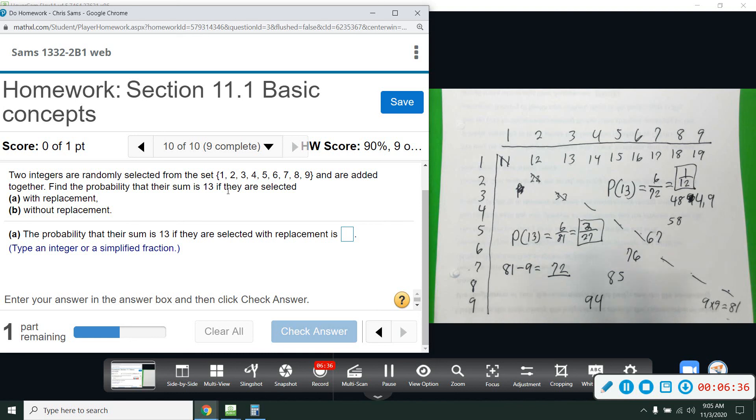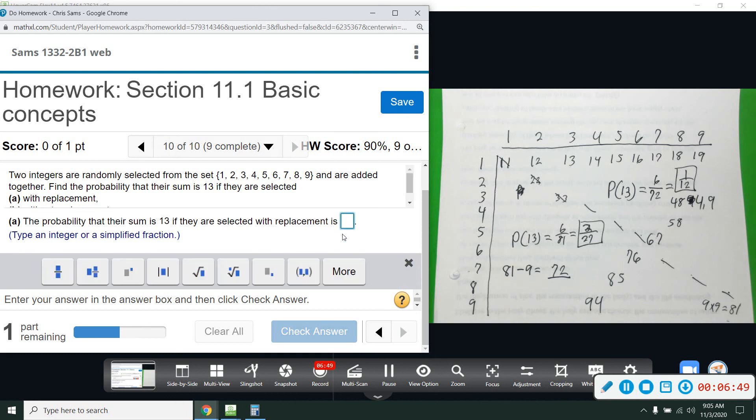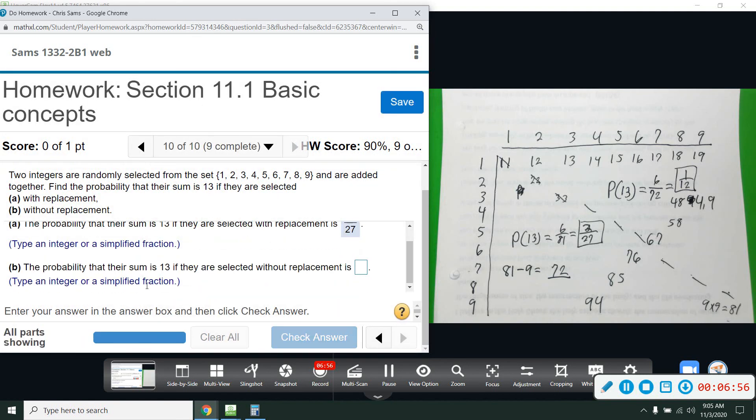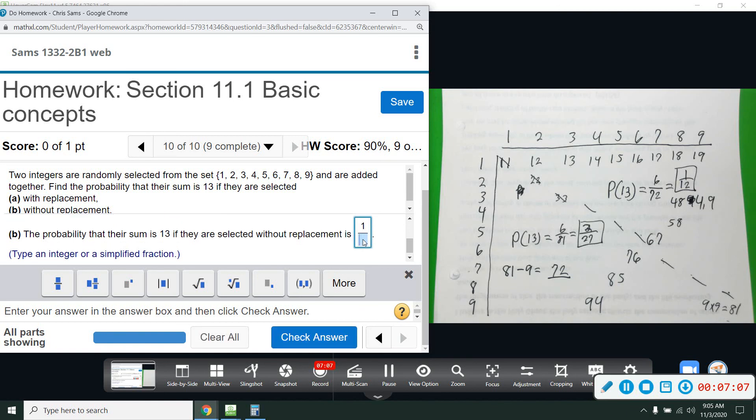So I was a little bit lazy not making the whole table, but hopefully you follow that explanation. If you don't, you can always email and we can go over this again. But that is what you want to do. So with replacement means we can use the same number. There are two out of 27 chance there. And then without replacement, that means we cannot use those repeated numbers. We would get rid of all those. And this would give us one out of 12.